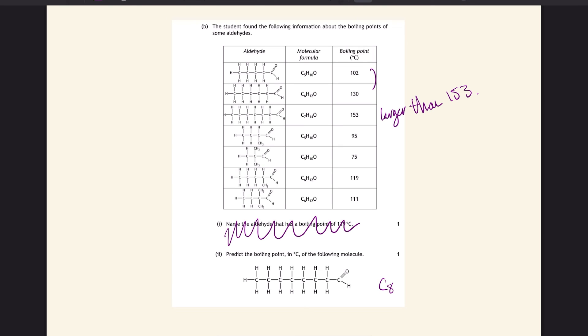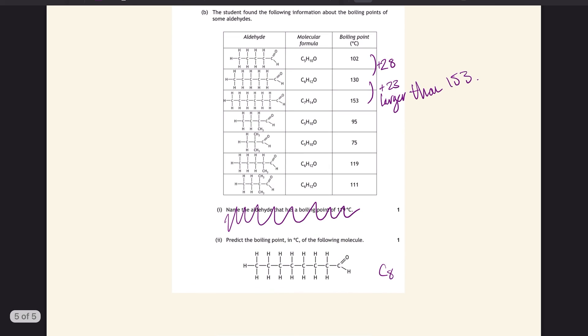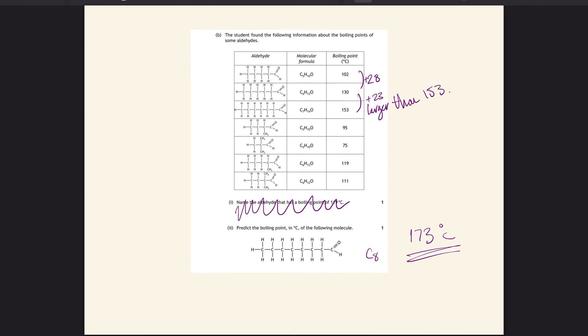You want to pick a number larger than 153. I would look at the differences that occurred in these ones - plus 23, so let's say we'll add on something between 18 and 20 degrees for the eight carbon one. I'll just add on 20, so we'll say it's 173 degrees Celsius. These pattern questions can be quite difficult, but trying to see where your molecule fits within the examples always helps.